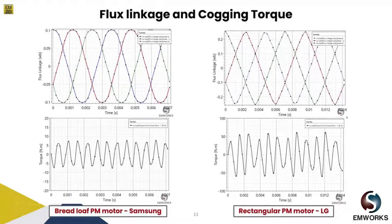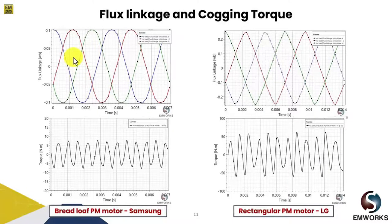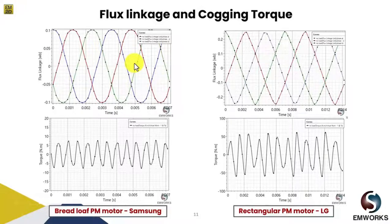To begin with, let's look at the flux linkage and cogging torque for both designs. As you know, the rate of change in air gap flux density at the magnet edges — as one moves from one magnet pole to the next — contributes to cogging torque. Generally, the faster the rate of change in flux density, the greater the potential for increased cogging torque. In the case of the Breidloff PM motor design, due to its shaping, we have a better flux linkage which is closer to sinusoidal.